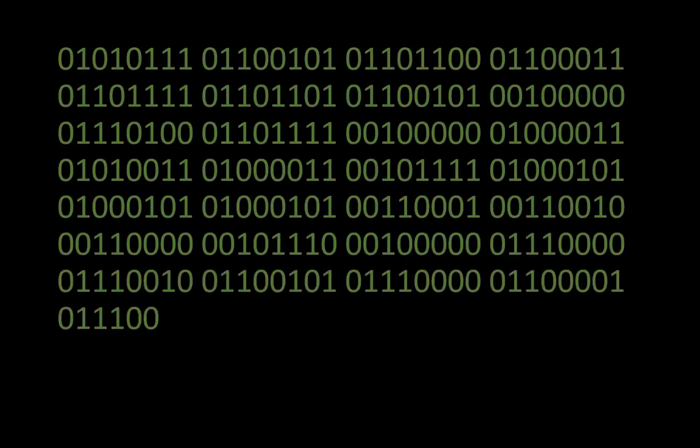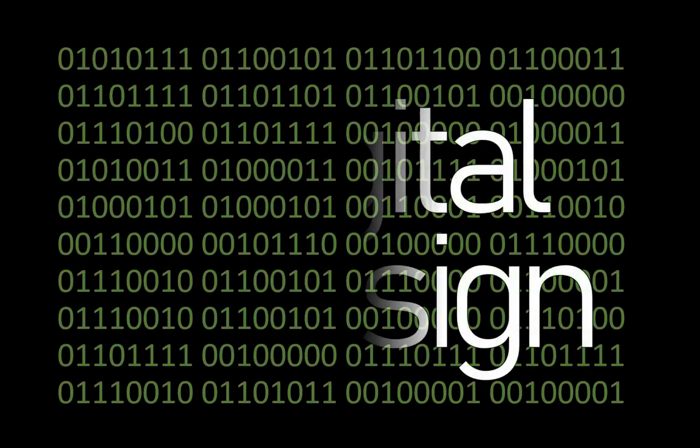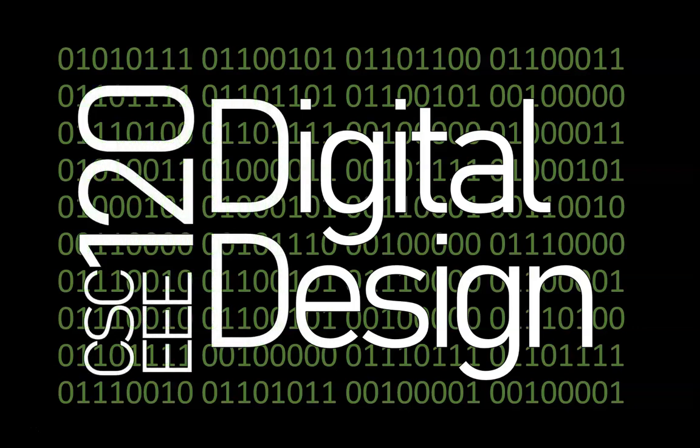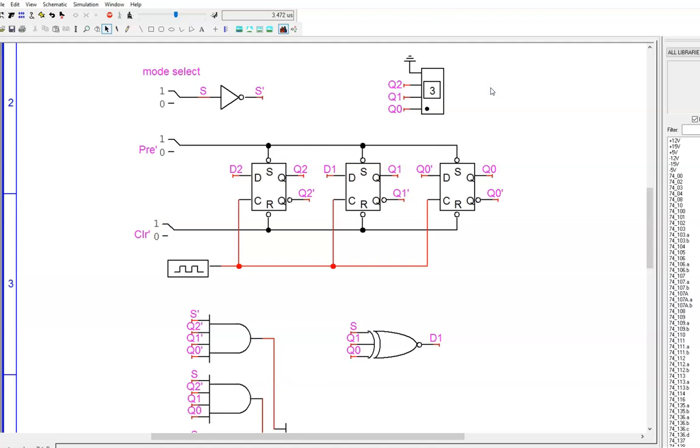And it is synchronous, so the transitions are clean. But check this out: I flip the switch and now the count goes down. At any point I can flip the switch and the count reverses direction. It doesn't get cleared, so it remembers its current state and continues the count from there.